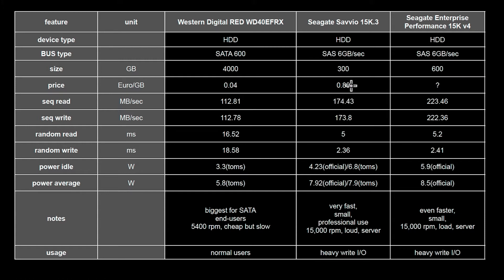The price is a huge difference — this is a factor of 20 more expensive, at 0.89 euros per gigabyte. This is pretty expensive. You also see that this drive is way smaller, only 300 gigabytes. So the Western Digital is more like storage for large data — video, stuff like that. The Seagate is for smaller data that you have to access fast, business-critical data. It also has a better interface which can transfer way more data than SATA. So this is really for professional use.